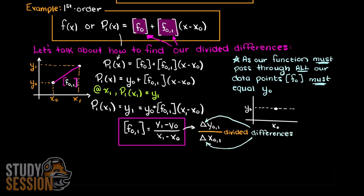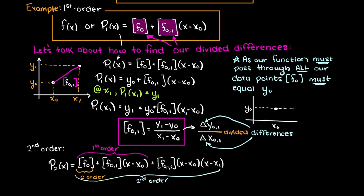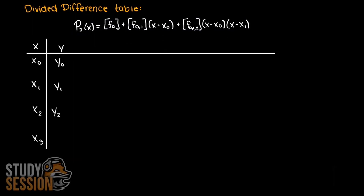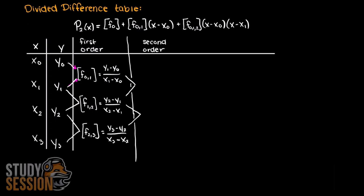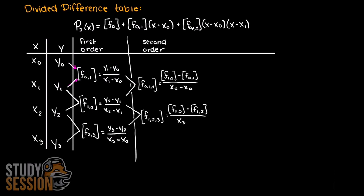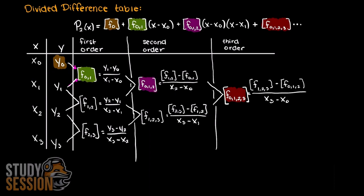I will link a great video in the description down below for a second order derivation if you're interested. The biggest advantage to Newton's polynomials is that they are recursive, meaning if we wanted to add a data point to our interpolation function, we do not need to redo all of the math again. We can just add in a new term on the end of our Newton polynomial, and this allows us to create what are called divided difference tables that utilize this recurrence relationship.